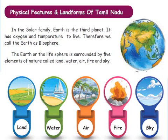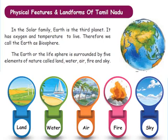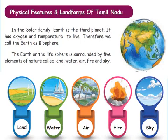Have you heard of the solar family — the solar system? What is the center of the solar system? Yes, that is the sun. There are eight planets in the solar system: Mercury, Venus, Earth, Mars, Jupiter, Saturn, Uranus, and Neptune. Our earth is the third planet and it is the only planet which has the conditions for life to survive. Earth has an atmosphere with oxygen, and the temperature is correct for the survival of animals, trees, and human beings.